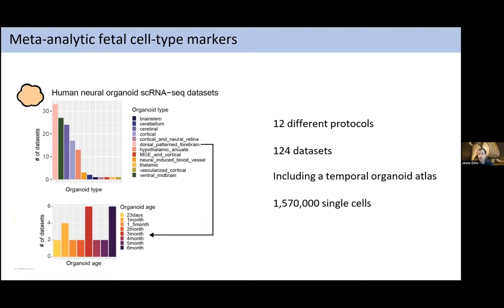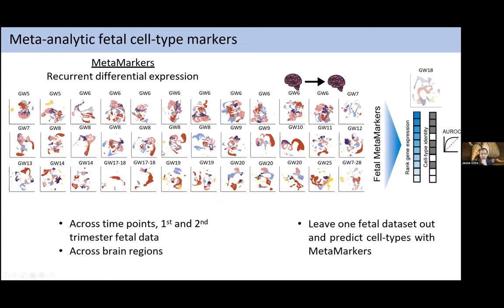We also want enough detail to characterize which cell types are going right and which are going wrong. This seemed appropriate given that most organoid data is characterized at a fairly coarse level from a single-cell point of view. For the organoid data we have 124 different data sets with 12 loosely-defined different protocols — including a temporal organoid atlas — comprising about 1.5 to 1.6 million cells, capturing different organoid types, regions, and ages. This data looks like fairly nice t-SNEs.